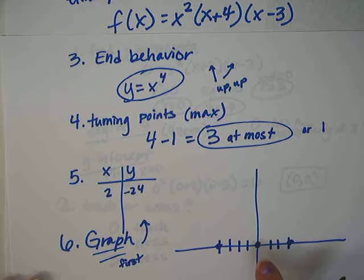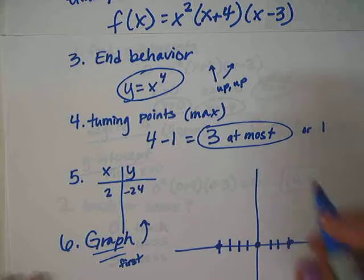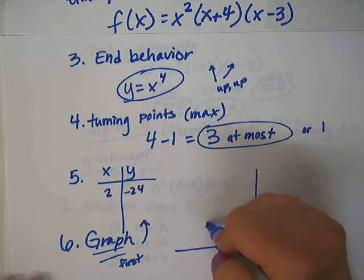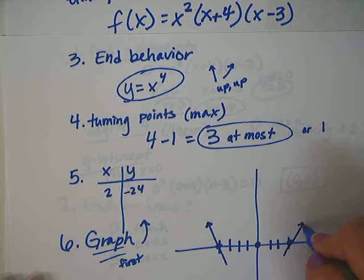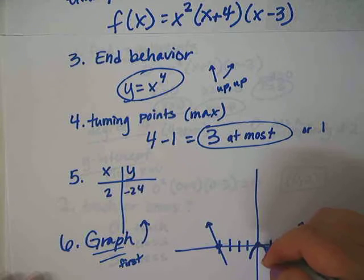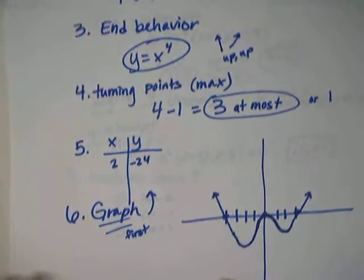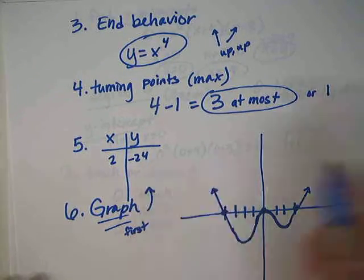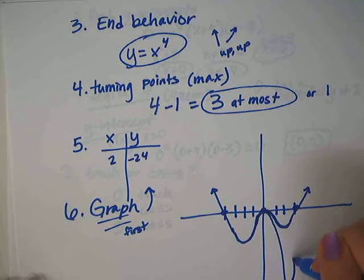We have x-intercepts at 0, negative 4, and positive 3. The ends of the graph go up, up. The graph touches at 0 and crosses at negative 4 and positive 3. Based on the number of zeros, we can already tell there are going to be three turning points and not just one.